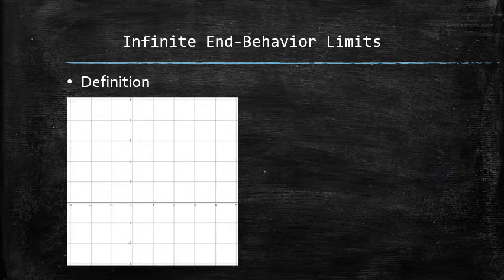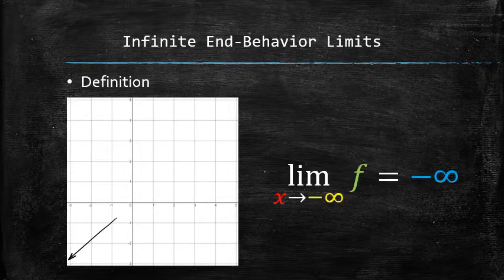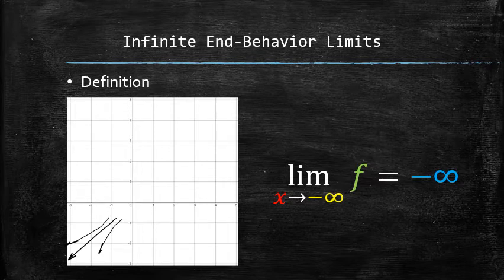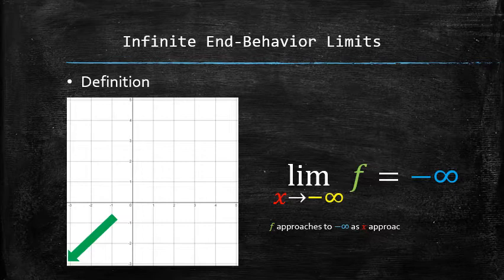We associate the following behavior with the following limit statement called an infinite end-behavior limit. Note that we do not suggest that the graph must approach negative infinity in any particular way — it can approach it faster or slower for different functions. Either of these behaviors are described with the same limit statement, and schematically can be expressed with an arrow pointing in the lower left corner of the graph. We say f approaches negative infinity as x approaches negative infinity.